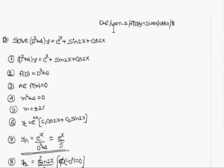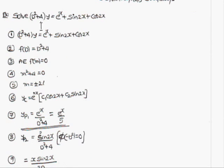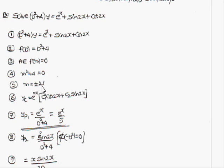Next, consider the problem: (D² + 4)y = eˣ + sin2x + cos2x. Here f(D) = D² + 4. The auxiliary equation is m² + 4 = 0, giving m = ±2i. Therefore, the complementary function is e⁰ˣ(C₁cos2x + C₂sin2x). We will find particular integrals yp1, yp2, and yp3 individually.